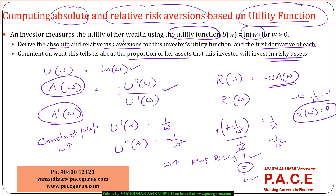So that is what we can understand from this example. We can look at similar examples, but for a log utility function, this is how we assess the absolute risk aversion as well as the relative risk aversion.